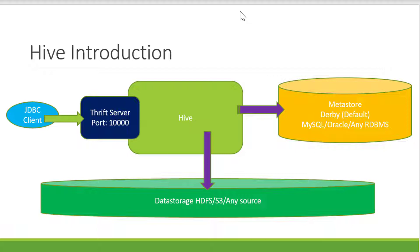We can configure Hive to work with any other database like MySQL, Oracle, or any RDBMS. The actual data gets stored within a data storage location like HDFS. Hive provides the data warehouse offering by mixing the meta information from the metastore with the actual data, giving an analysis platform on structured data. Within Hive there is a component called the thrift server that runs on port 10,000 by default, facilitating JDBC clients to connect and run queries.